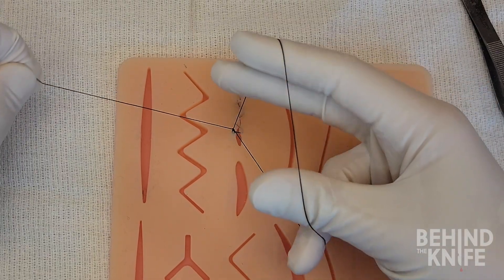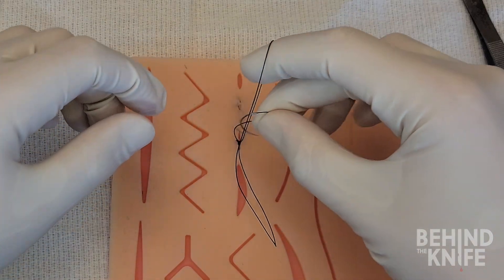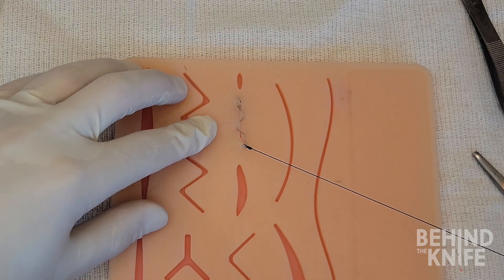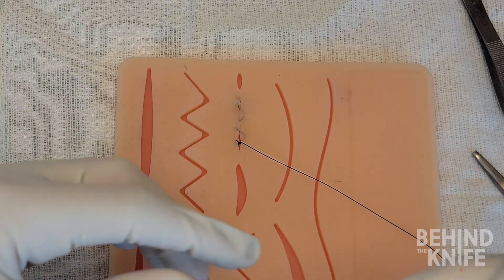On the final throw, we will pull the entire suture, including the needle, through the loop until the entire loop slides down and locks the suture in place.